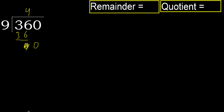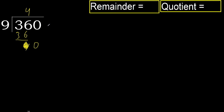Next, bring down 0 on this side. 0 is less, therefore there is no next number. Therefore finish it — complete with 0. Always complete with 0 when finished.